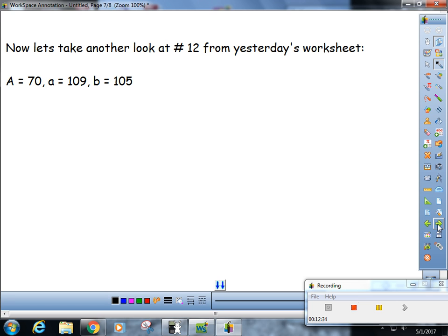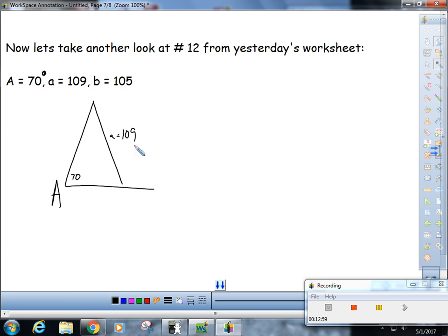Now let's follow along with me on this one. I'll go as fast as I can without making any mistakes. So this is actually looking at number 12 from yesterday's worksheet. A is 70 degrees, so let's put that in the bottom left. a is 109, and little b is 105. That makes this big B.